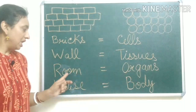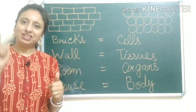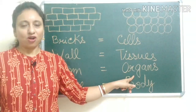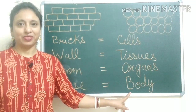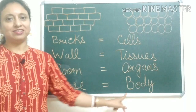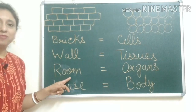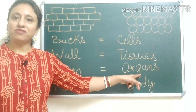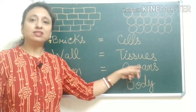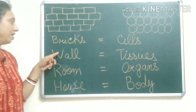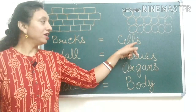Different types of rooms together make a house. Just like that, different types of organs all together make our human body. So our body is just like a house made up of rooms. Our body is made up of different organs; the rooms are made up of walls; the organs are made up of different tissues; the walls are made up of bricks; and the tissues are made up of cells.